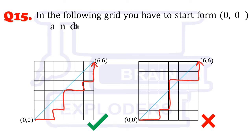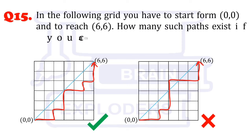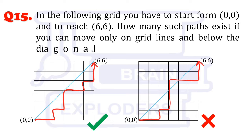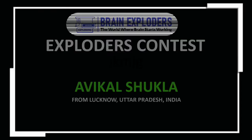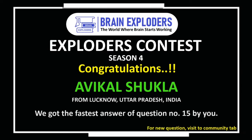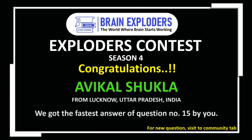In the following grid, you have to start from (0,0) and reach (6,6). How many such paths exist if you can move only on grid lines and below the diagonal? You are watching Brain Exploders, the world where brain starts working.